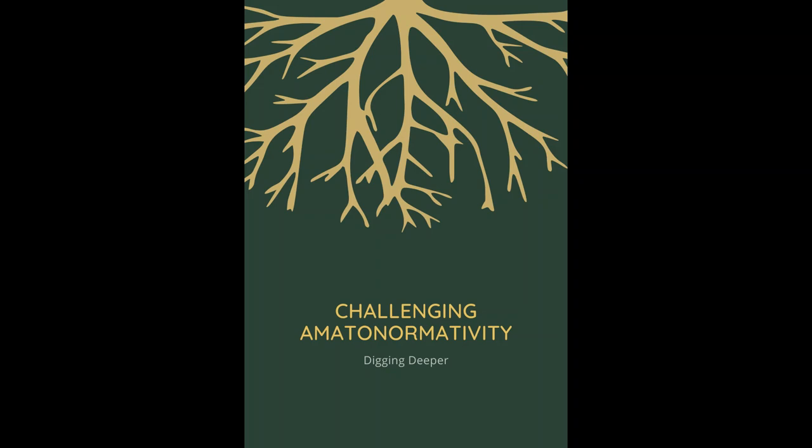Definitions. These basic definitions will be helpful as you go through the guide. 1. Ableism: the discrimination and prejudice against disabled people, or a system that places value on people's bodies and minds based on societally constructed ideas of normality, intelligence, excellence, desirability, and productivity.